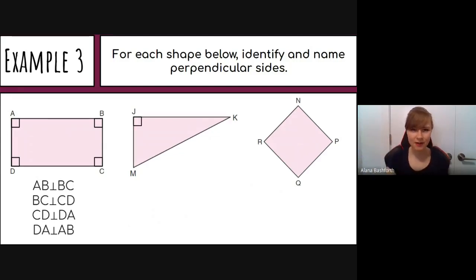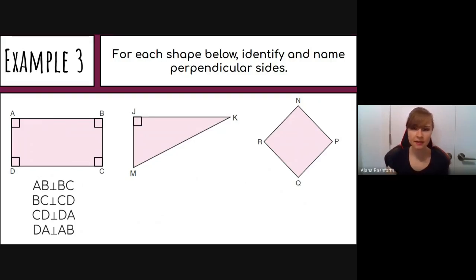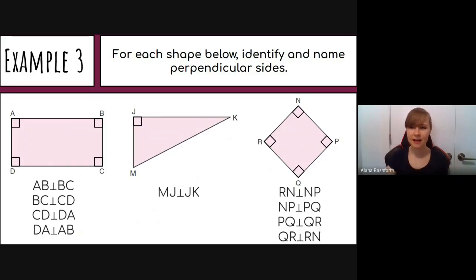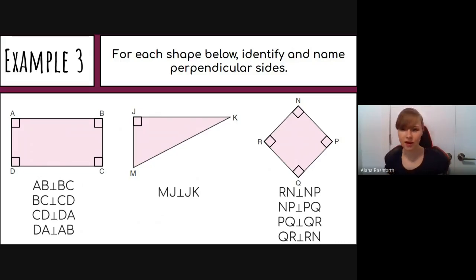For the second shape, the square only fits exactly in one corner, so there is only one perpendicular pair: MJ is perpendicular to JK. For the last shape, the squares fit in all corners, giving: RN is perpendicular to NP, NP is perpendicular to PQ, PQ is perpendicular to QR, and QR is perpendicular to RN.